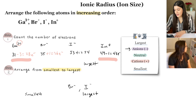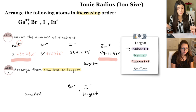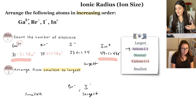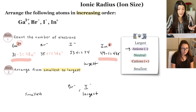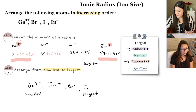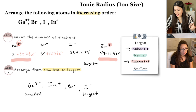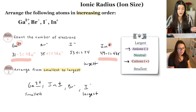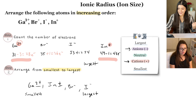Now comparing gallium and indium, both cations: the main thing to focus on is the charge. Gallium has a 3⁺ charge and indium has a 1⁺ charge. The higher the positive charge, the smaller the ionic radius — so gallium is the smallest. The final order from smallest to largest is: Ga³⁺, In⁺, Br⁻, I⁻.